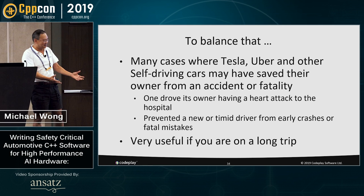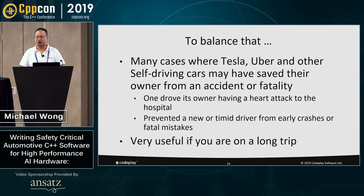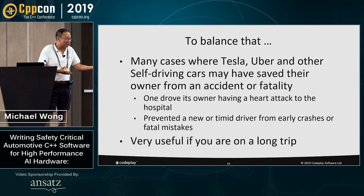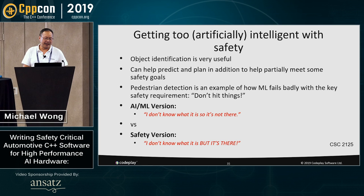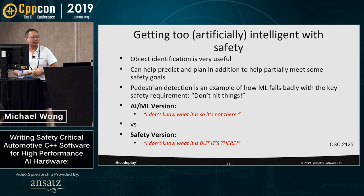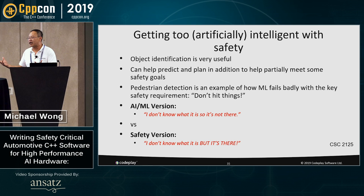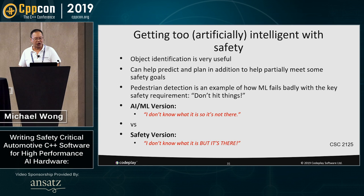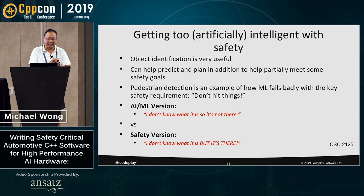Having said all that, I want to balance that there have been many cases of Tesla, Uber, and other self-driving cars that have saved their owner from accidental fatality — there's one case where one drove its owner having a heart attack to the hospital. Getting too artificially intelligent with safety is a problem. Object identification is useful — you can help predict and plan in addition to helping partially meet some safety goal. Pedestrian detection is an example of how ML fails badly with the key requirement of 'don't hit things.' With AI and ML, if it doesn't know what something is, it's not there. What really should be the safety version is: I don't know what it is, but it's there and I should take a safe maneuver.